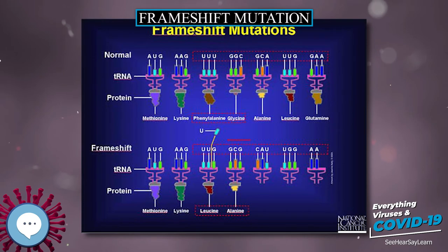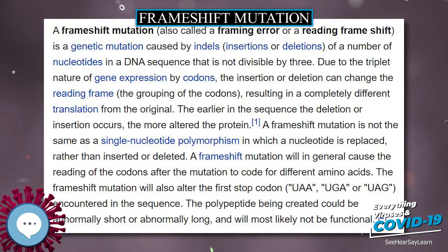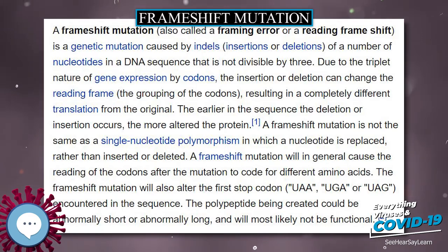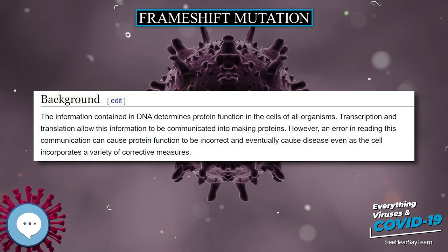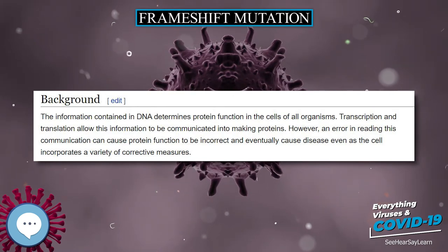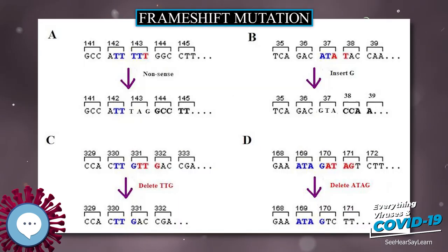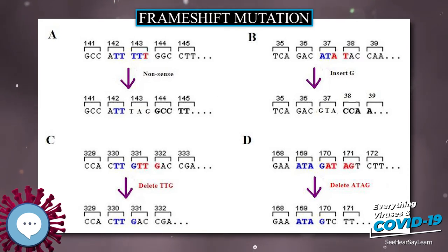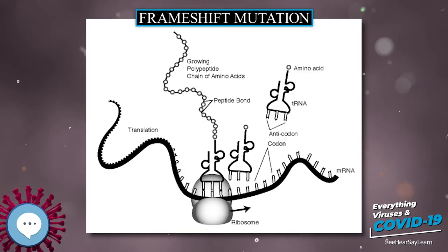Frameshift mutations can occur randomly or be caused by an external stimulus. The detection of frameshift mutations can occur via several different methods. Frameshifts are just one type of mutation that can lead to incomplete or incorrect proteins, but they account for a significant percentage of errors in DNA — genetic or environmental.